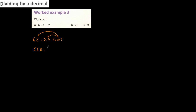So 63 divided by 0.7 becomes 630 divided by 7. In 63 we have 9 times 7 equals 63, remainder zero. We still have one more zero, so we send it down and it adds to the end of the answer, giving us 90.